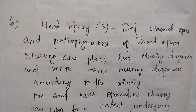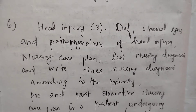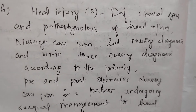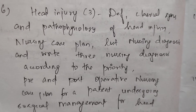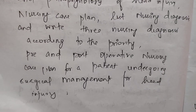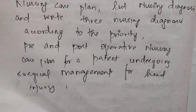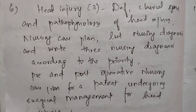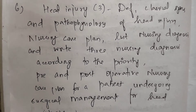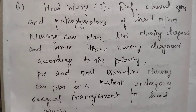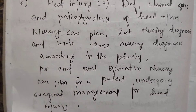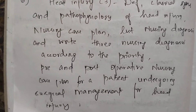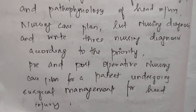Next, head injury appears three times in 15-mark questions, which includes definition, classical signs and pathophysiology of head injury, nursing care plan, nursing diagnosis — write three nursing diagnoses according to priority — and pre- and post-operative nursing care plan for a patient undergoing surgical management for head injury. The questions overlap on clinical signs, pathophysiology, nursing diagnosis with three diagnoses, and pre- and post-operative nursing care plan.